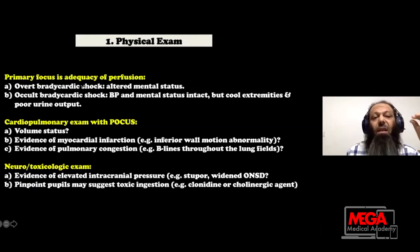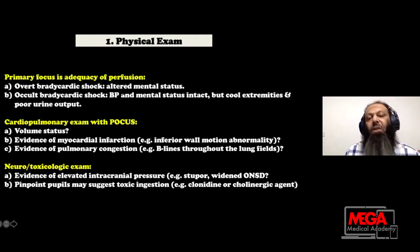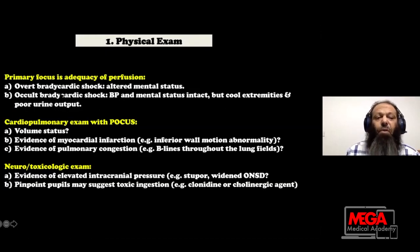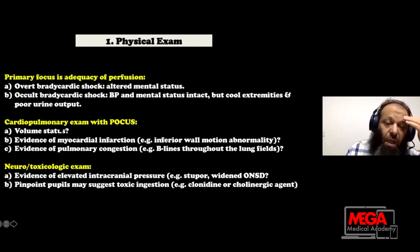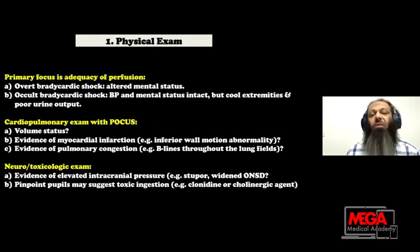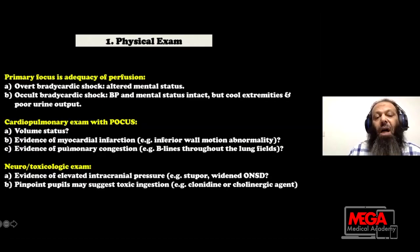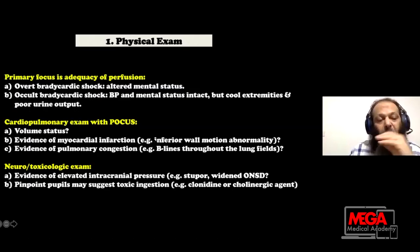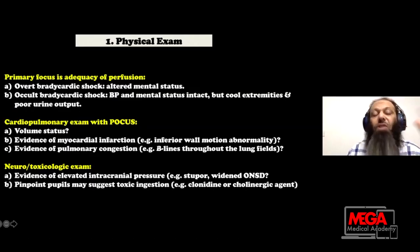For the approach, start with physical exam — focus on the adequacy of perfusion. To predict cardiogenic shock, look for altered mental status. For occult cardiogenic shock, assess the pressure, mental status, and cold extremities — this gives an idea about adequacy of perfusion with bradycardia. When you go for cardiopulmonary exam, use point-of-care ultrasound, especially if the patient is shocked. As Dr. Waleed showed, assess volume status and look for regional wall motion abnormality to answer: is it MI or not? An inferior MI regional wall motion abnormality is commonly related to right coronary occlusion, RV infarction, and AV nodal block or sinus node disease.